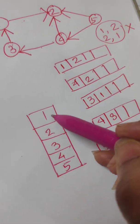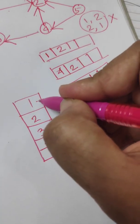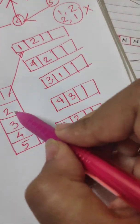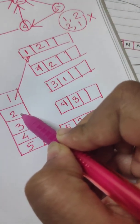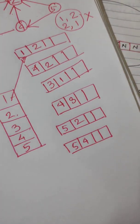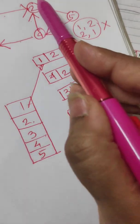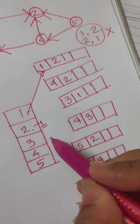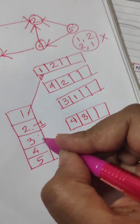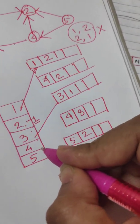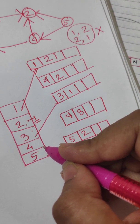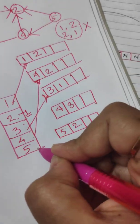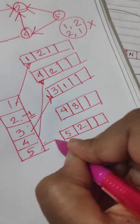Vertex one will point at the first edge that starts with one — this is that edge. Vertex two will point at the first edge that starts with two, but there are no edges that start with two. The out-degree of vertex two is zero, so it will be pointing at null. Vertex three will point at the first edge that starts with three. Vertex four will point at the first edge that starts with four. Vertex five will point at the first edge that starts with five.